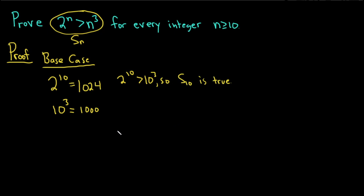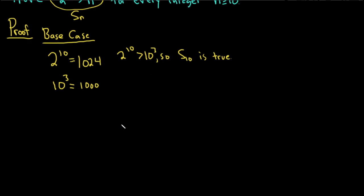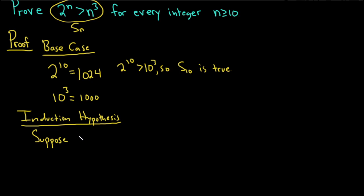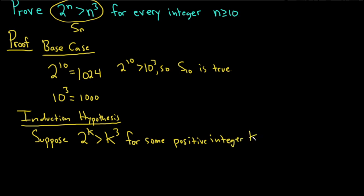The next step is called the induction step. I like to do this in three steps instead of two. So let's write down what's called the induction hypothesis. In the induction hypothesis, this is the step where we assume that our statement is true for some arbitrary positive integer k that is greater than or equal to 10. So we'll say: suppose that 2 to the k is greater than k cubed for some positive integer k greater than or equal to 10. That condition is going to be really important.